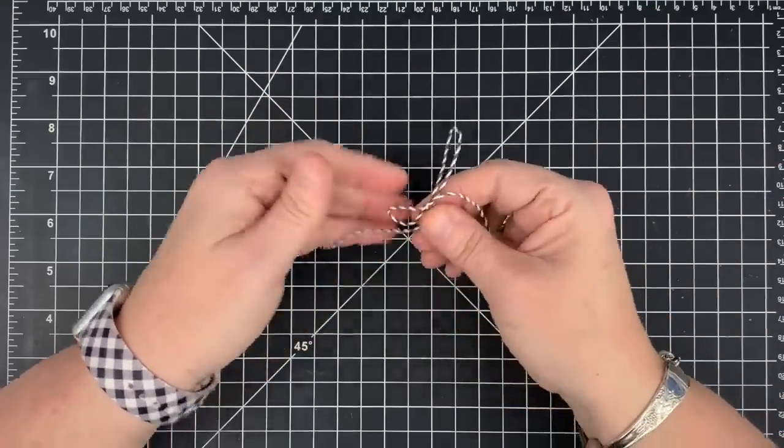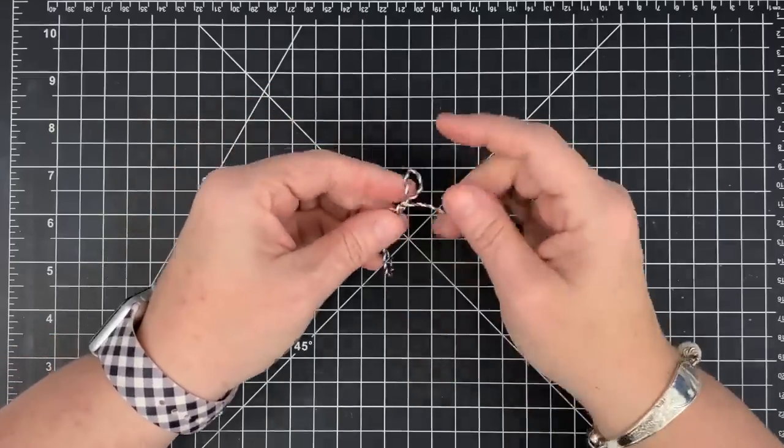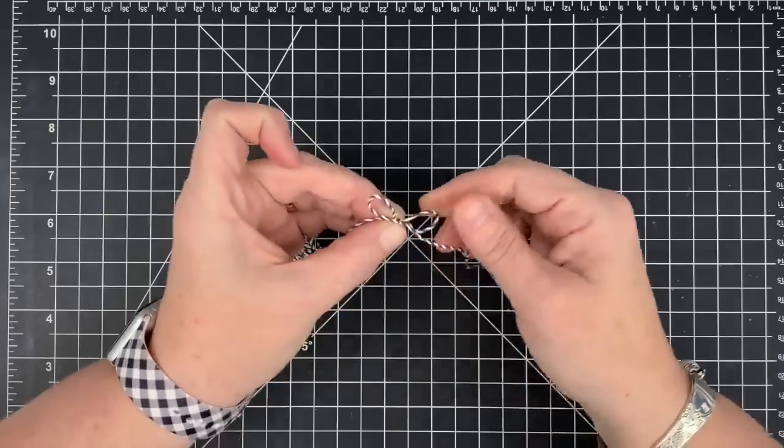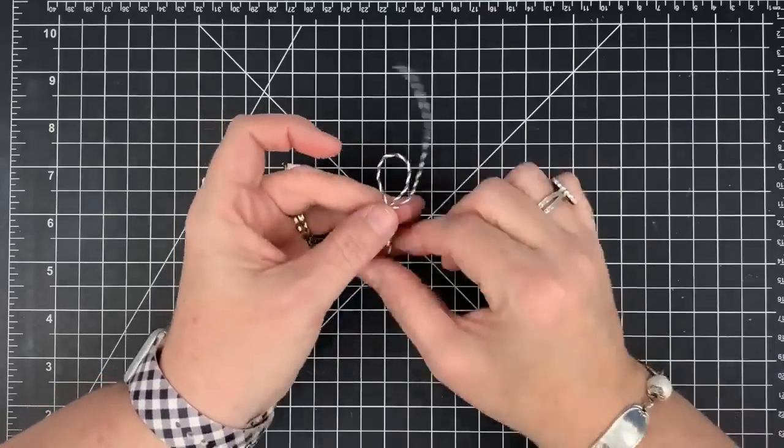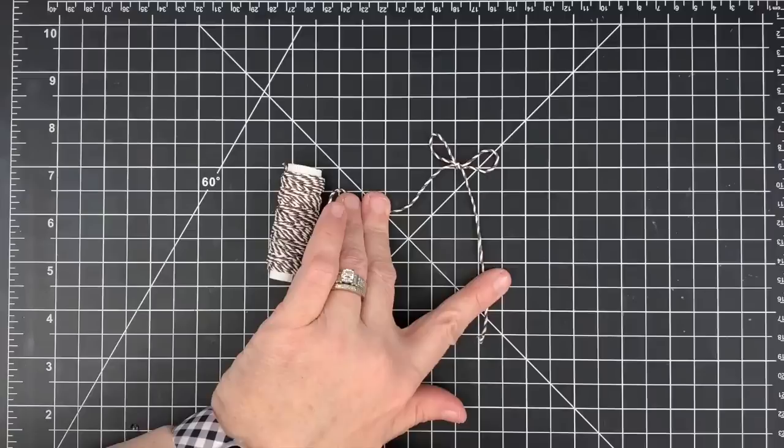But if you do it too tight, you'll have a harder time adjusting that little loop. Let me do this side as well. It's nice and tight. See how it turned when I twisted it? I have a much harder time adjusting these loops because of how tight they are than if I do it loose, adjust, and then tighten.